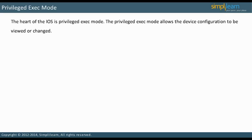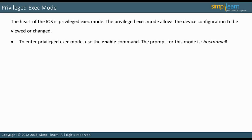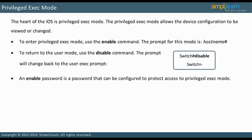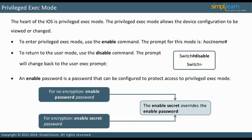The heart of the IOS is Privileged Exec Mode. The Privileged Exec Mode allows the device configuration to be viewed or changed. Use the Enable command to enter Privileged Exec Mode. The prompt for Privileged Exec Mode is hostname pound sign. Enter the Disable command to return to User Mode. The prompt will change back to the User Exec prompt, as shown in the slide. An Enable password can be configured to protect access to Privileged Exec Mode. Note there is a choice between encryption and no encryption. The Enable Secret Password overrides the Enable Password if both are configured.